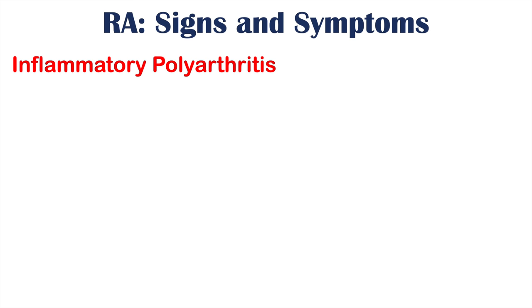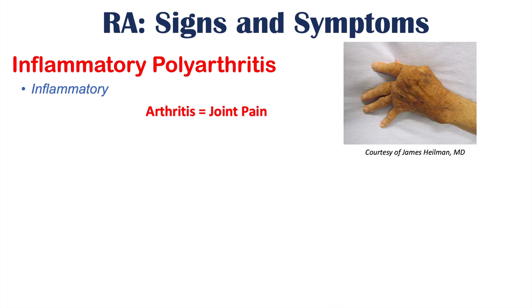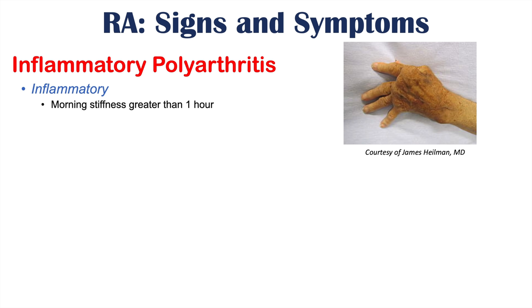The hallmark finding in rheumatoid arthritis is inflammatory polyarthritis. Breaking that down: inflammatory means the joints are undergoing an inflammatory process. One characteristic of inflammatory joints is morning stiffness — the patient wakes up feeling their joints are stiff and has difficulty moving them. This morning stiffness is greater than one hour.